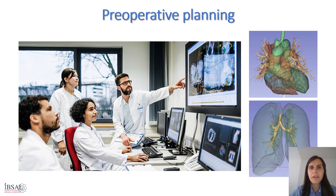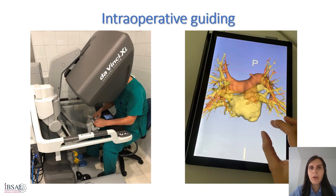The availability of the 3D model several days prior to surgery allows surgical team members to discuss the surgical strategy, evaluating all possible approaches and solutions to perform the operation, as well as defining critical maneuvers in a calmer condition than the surgical theater. The 3D reconstructions can also be used for intraoperative guiding during the procedure in robotic surgery. The console surgeon can directly manipulate the interactive PDF to manually rotate the 3D reconstruction on a computer or tablet, allowing live comparison of anatomy between the surgical view and the 3D model.